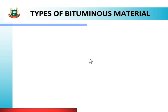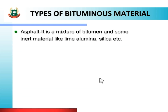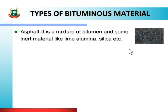Let us see about types of bituminous material. First is asphalt. It is a mixture of bitumen and some inert material like lime, alumina, silica, etc. As shown in the figure, this is the type of asphalt. It is one of the bituminous materials.